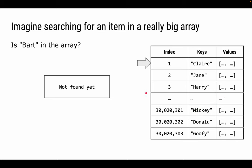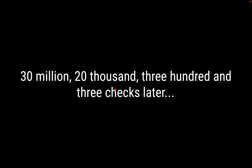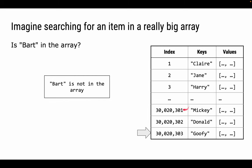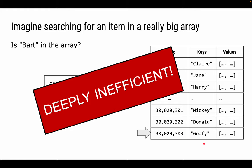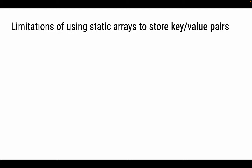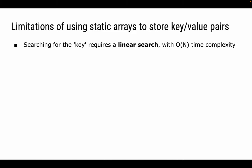What if we've got a really big array? We're looking for 'Bart', and we start at Claire — no. After 30,000 or more checks, we get to the end of our keys and didn't find Bart. That was a deeply inefficient process. We had to check through every single thing in our very large database to find a particular item, only to discover the item wasn't there. This is one of the limitations of using a static array to store key-value pairs — searching requires linear search, O(N) complexity.